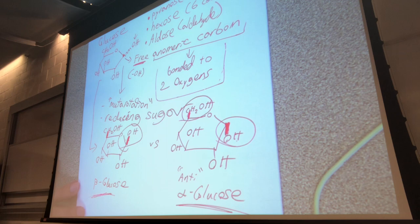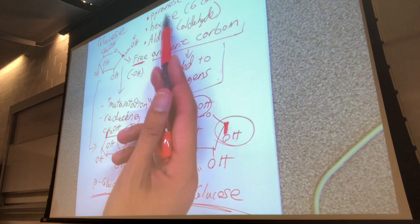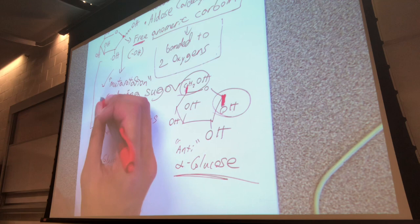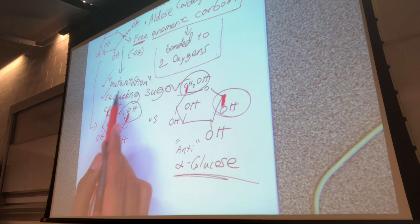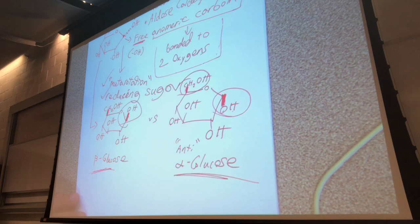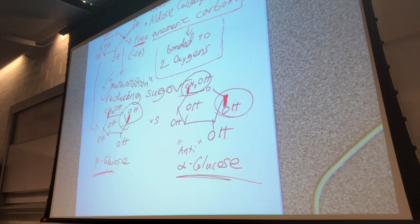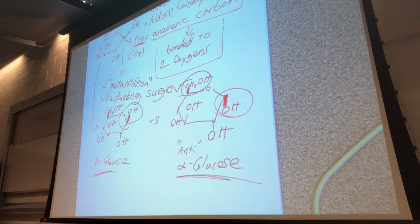For each monosaccharide, you should determine: Is it a pyranose or furanose? Is it a hexose or pentose? Is it an aldose or ketose? Know what it looks like, identify the anomeric carbon, and determine if it's a free anomeric carbon. If it is a free anomeric carbon, it can undergo mutarotation and is a reducing sugar. Also determine if it's an alpha or beta anomer.